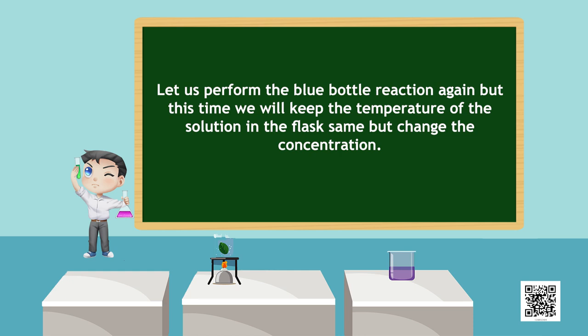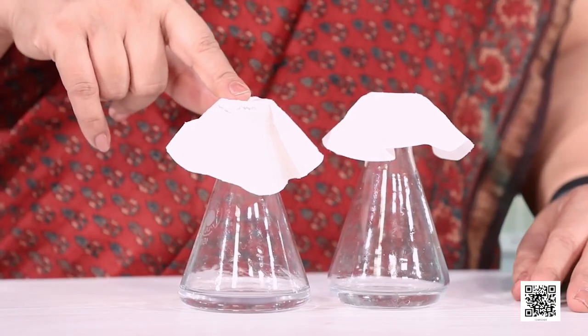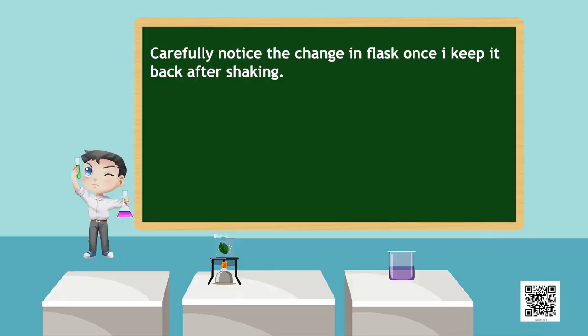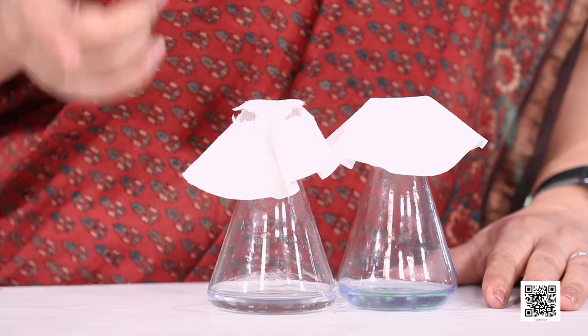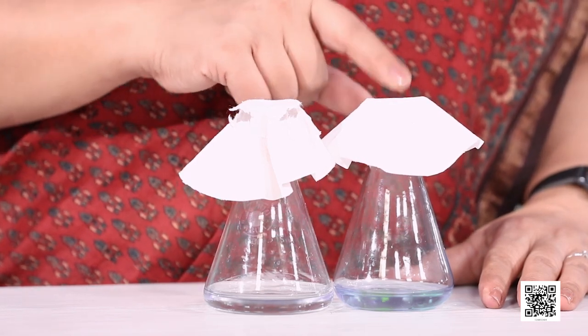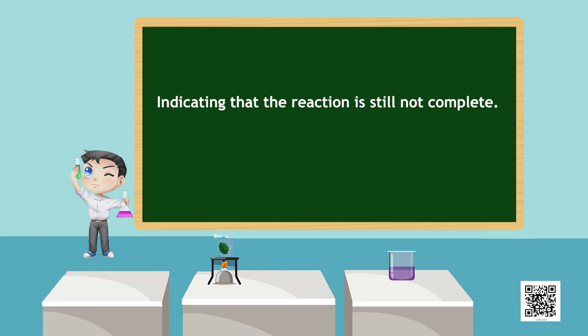Let us perform the blue bottle reaction again, but this time we will keep the temperature of the solution in the flasks the same but change the concentration. I have taken methylene blue, potassium hydroxide, dextrose and water in both flasks, but of different concentration. The first flask has lower concentration and the second flask has higher concentration. Let us shake the flasks again 10 times as done earlier. The solution in flask 2 having higher concentration has already turned colorless, whereas in flask 1 it is still blue, indicating that the reaction is still not complete.